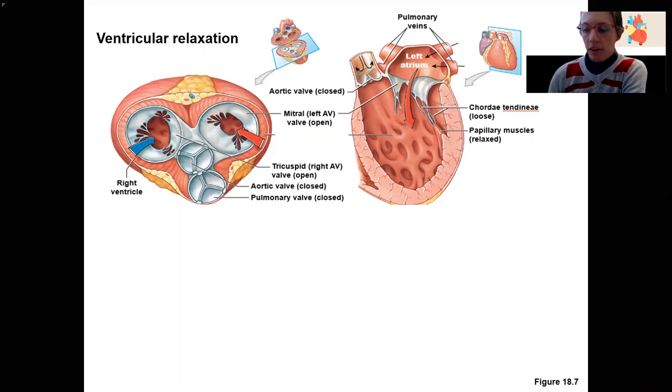So you know the names of the four valves, and there's two groups. Let's look at what happens to them during relaxation and then contraction of the ventricles, which is when they're going to change in the two states.